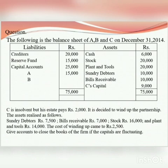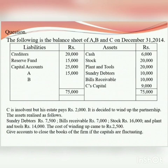It is decided to wind up the partnership. The assets realized are as follows: sundry debtors Rs. 7,500, bills receivable Rs. 7,000, stock Rs. 16,000, and plant and tools Rs. 14,000. The cost of winding up is Rs. 2,500. Give accounts to close the books of the firm if the capitals are fluctuating.